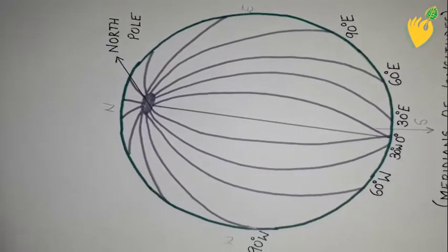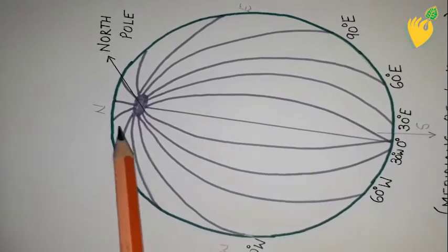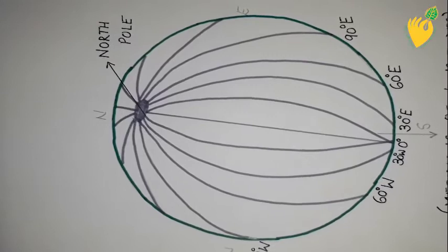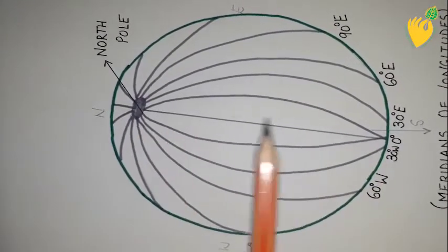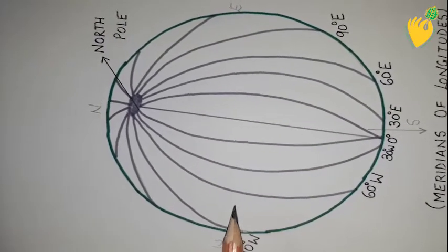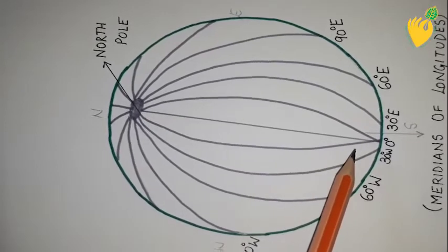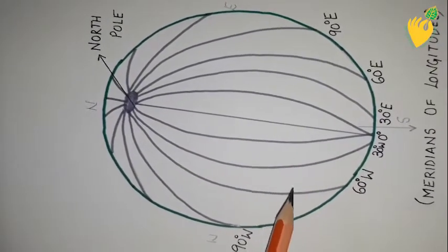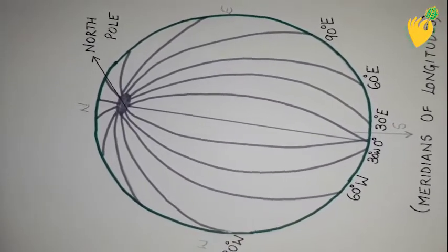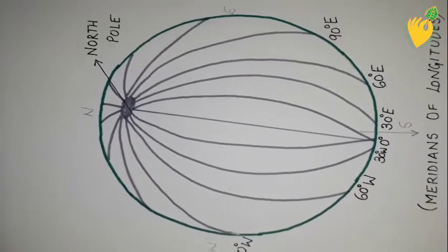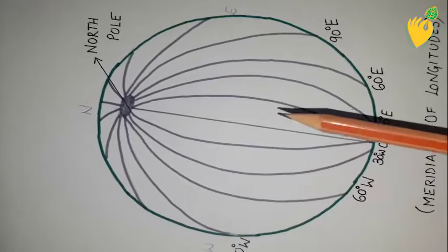The meridians of longitude divide the earth into eastern and western hemispheres, unlike the parallels of latitude which divide the earth into northern and southern hemispheres. The latitudinal lines have 90 lines in each hemisphere totaling 180, but for longitude there are 180 lines in the eastern hemisphere and 180 lines in the western hemisphere, making a total of 360 lines around the whole globe — because the circumference of the earth is 360 degrees.